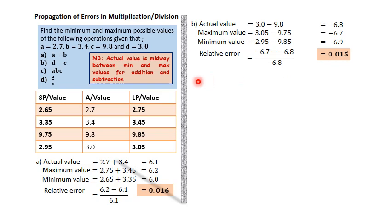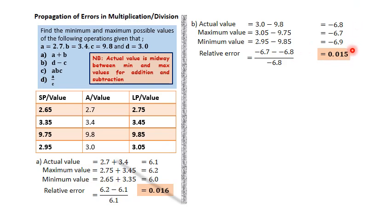At this point, please understand that the actual value is midway between the minimum and maximum values for addition and subtraction operations. For part A, 6.1 is the average of 6.2 and 6.0. Similarly, −6.8 is the average of −6.7 and −6.9. This makes relative error simpler — you can use (max − actual) ÷ actual or (actual − min) ÷ actual. That is not the case for multiplication and division.